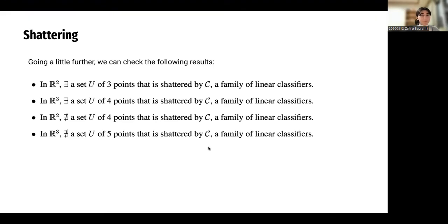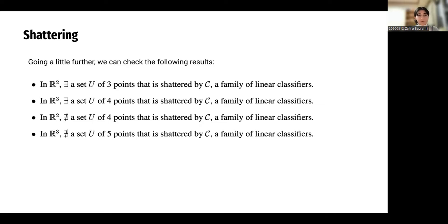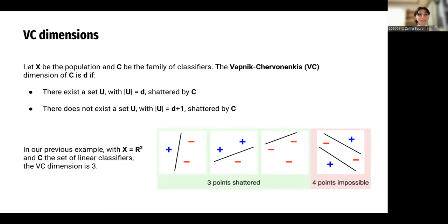To summarize: in the two-dimensional plane, there will always exist a set of three points that is shattered by C (family of linear classifiers), but we cannot find a set of four points shattered by C. In three-dimensional space, there will always be a set of four points shattered by C, but no set of five points can be shattered by C. These results help us understand what shattering means.